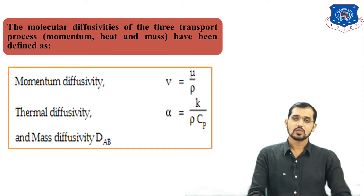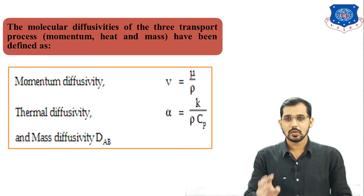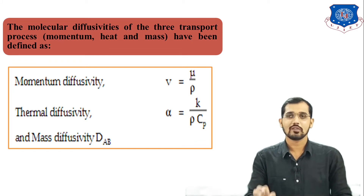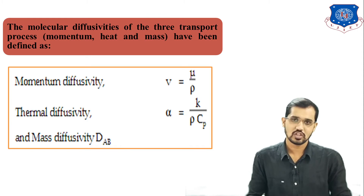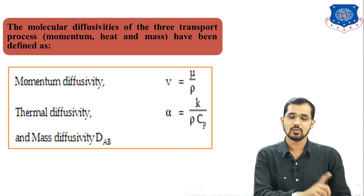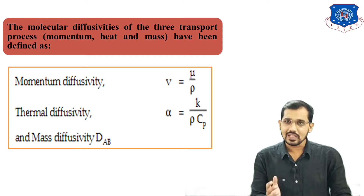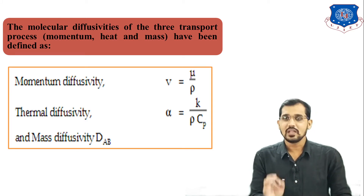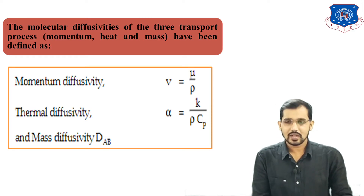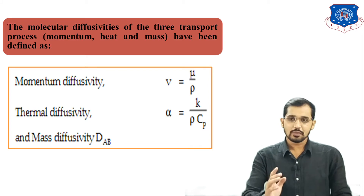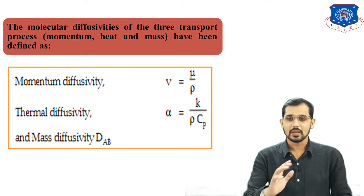In mass transfer we have mass diffusivity. This concept will be discussed in detail in coming lectures. For now, mass diffusivity relates to molecular diffusion — movement of substances from higher concentration to lower concentration regions. This term is represented by the capital DAB, meaning the diffusion coefficient of component A into component B. DBA would mean diffusion of component B into A.